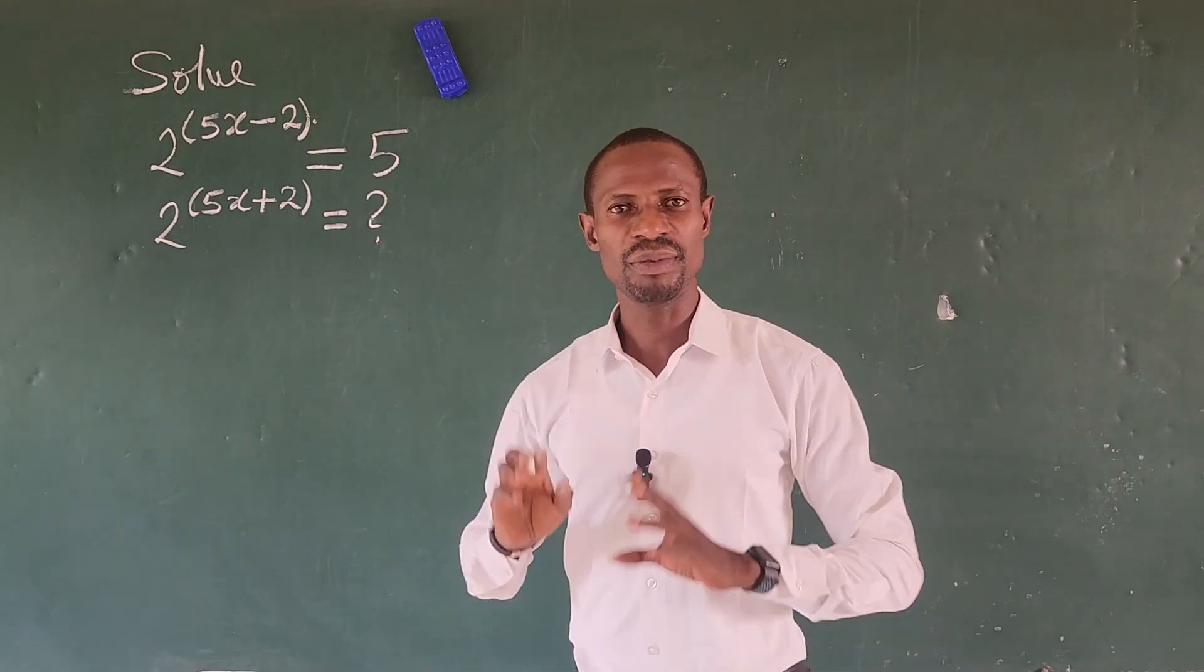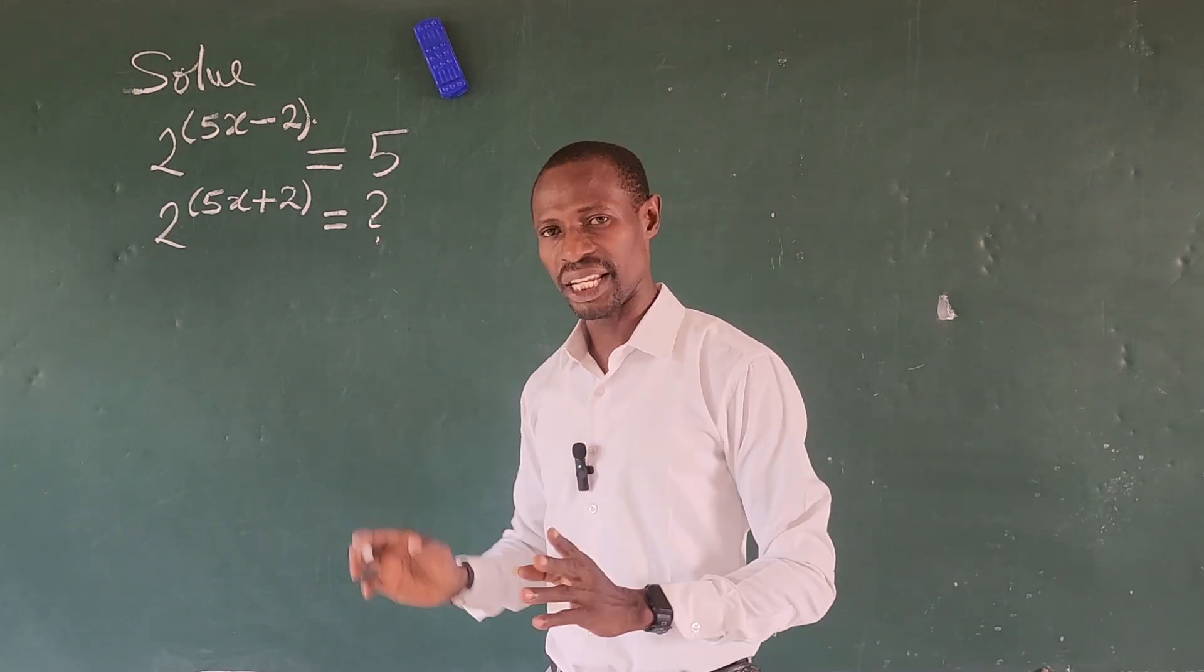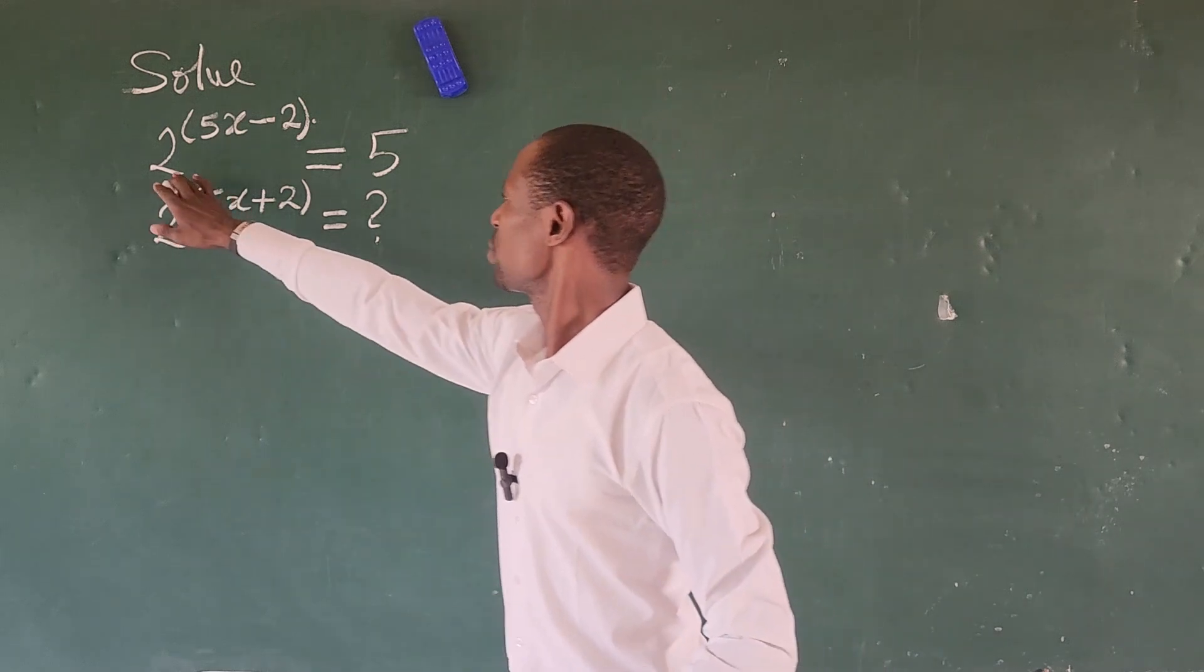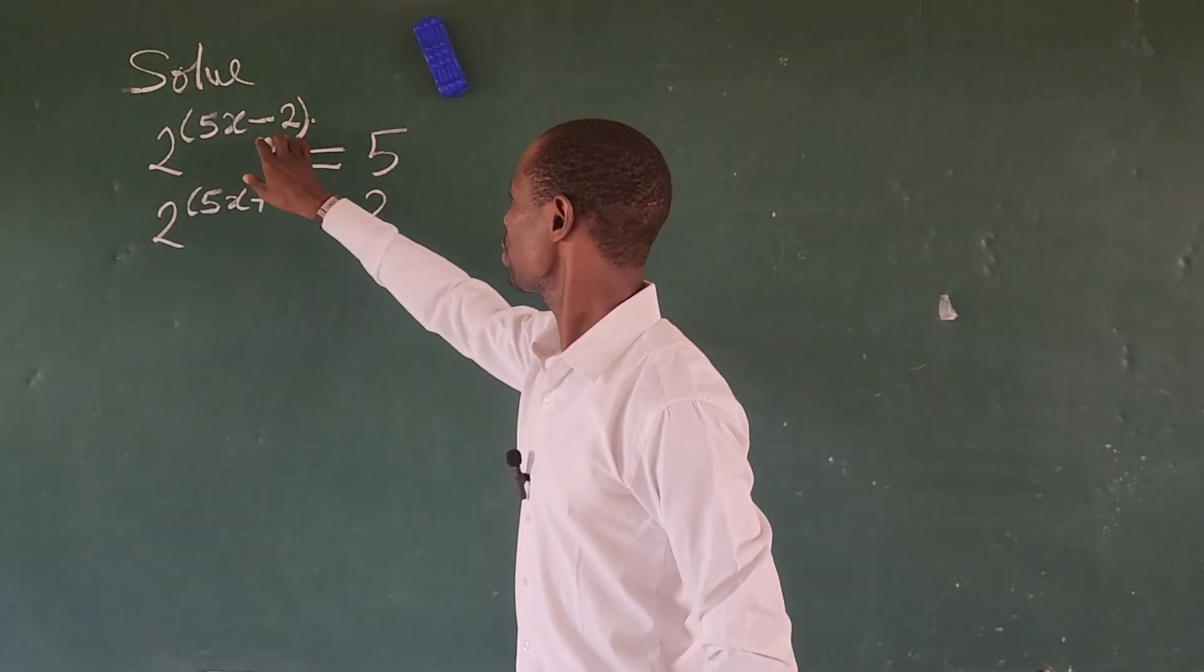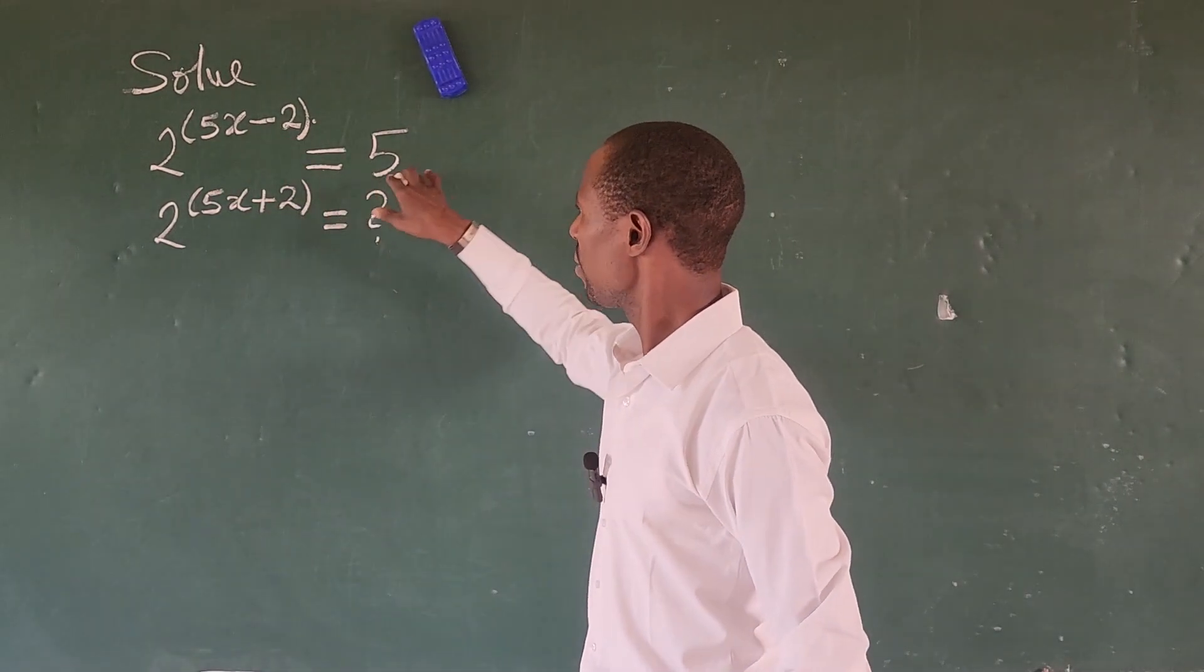Hi, we have one of the simplest exponential challenges here. The question is 2 to the power of 5x minus 2 is equal to 5.